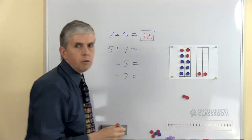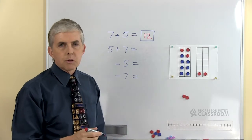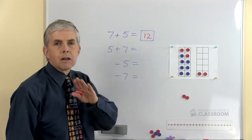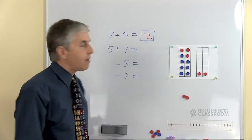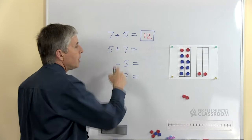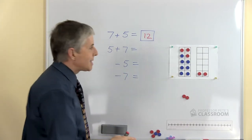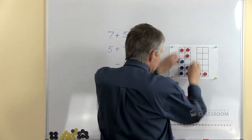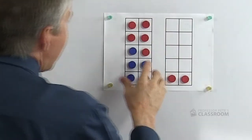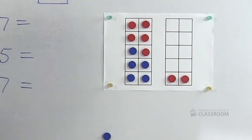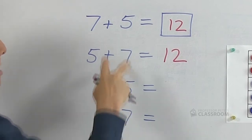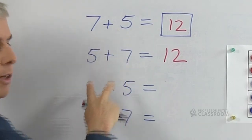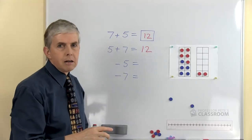Now once you know that 7 plus 5 equals 12, there are three more number facts that you can learn very quickly without a lot more time and effort. For example, what would happen if we had 5 and 7? Let's use the 10-frames to make sure that's correct — if we had 5 blue counters and then 7 red counters, of course we still have 12. We sometimes call these turnaround facts: 7 and 5, 5 and 7 — we can always do that in addition.